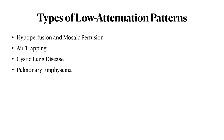There are basically four attenuation patterns which we need to know. The first is hypoperfusion and mosaic perfusion. The second is air trapping. The third is cystic lung disease. And finally, the most important one is pulmonary emphysema.